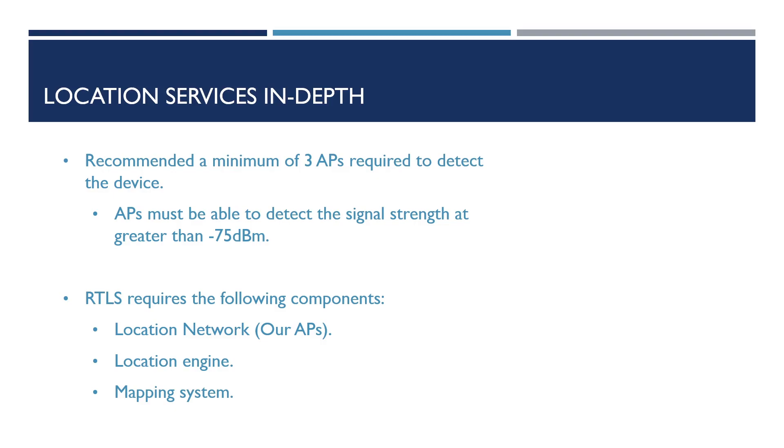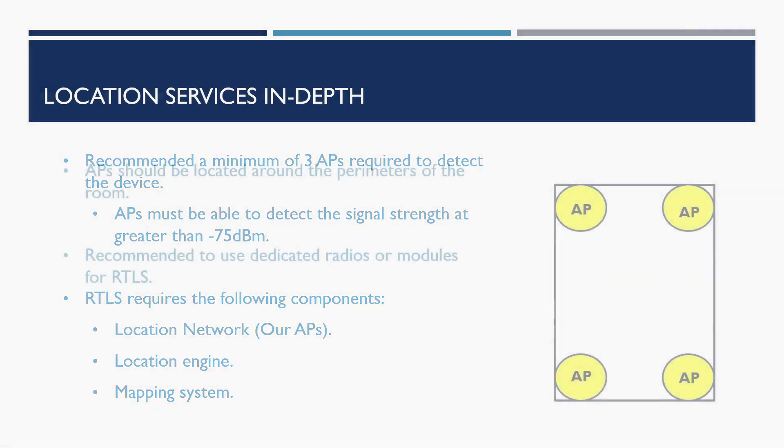On top of this for RTLS to work we require the following components: a location network, this usually consists of our APs or Bluetooth low energy beacons. A location engine to track and determine the location of assets for tracking. Finally a mapping system to plot the location of the tracked assets on an indoor plan of the building.